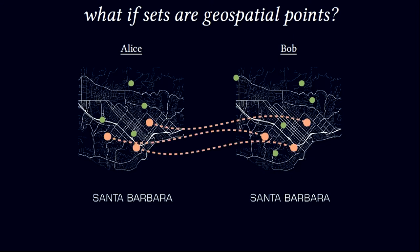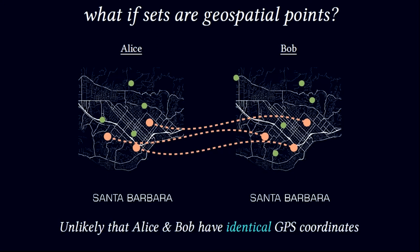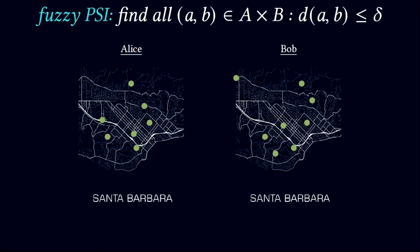Let's consider a variant of this where Alice and Bob are holding a set of GPS coordinates in and around Santa Barbara, and they are interested in learning if they both have GPS locations of any common locations. Now it's extremely unlikely that Alice and Bob will have identical GPS coordinates for a location — the more likely case is that they would have GPS coordinates which are pretty nearby. Hence we can formulate this as a fuzzy PSI problem, where our goal is to learn the points of Alice and Bob which are within some distance delta.